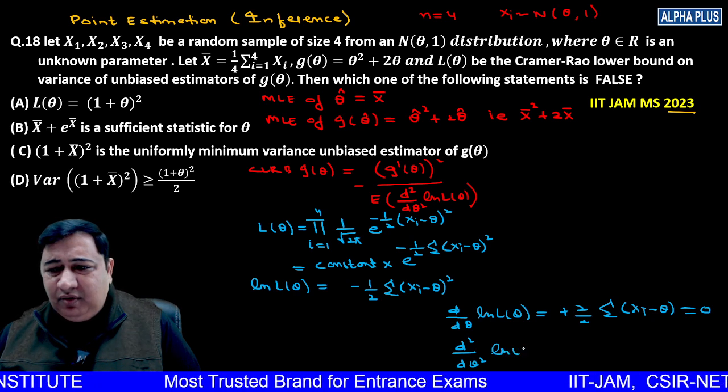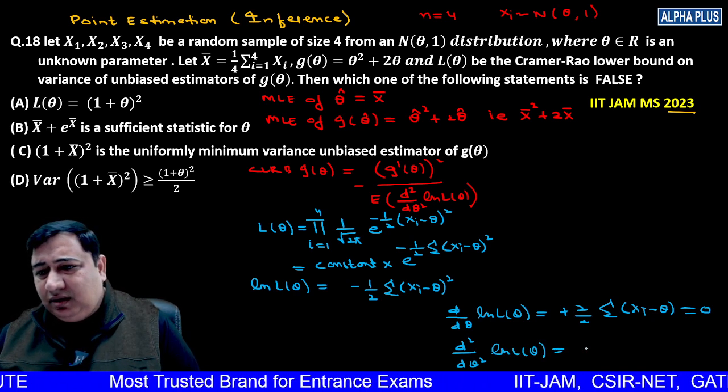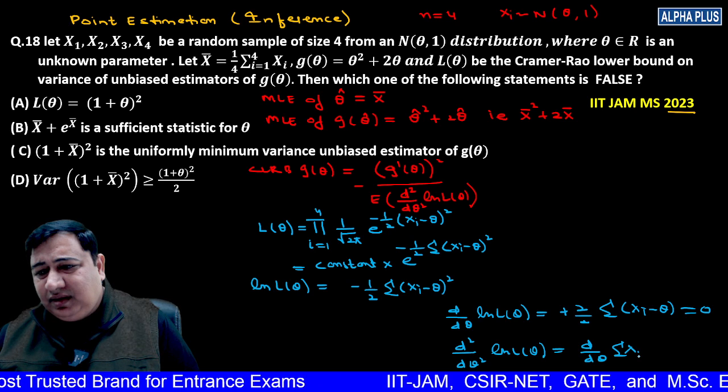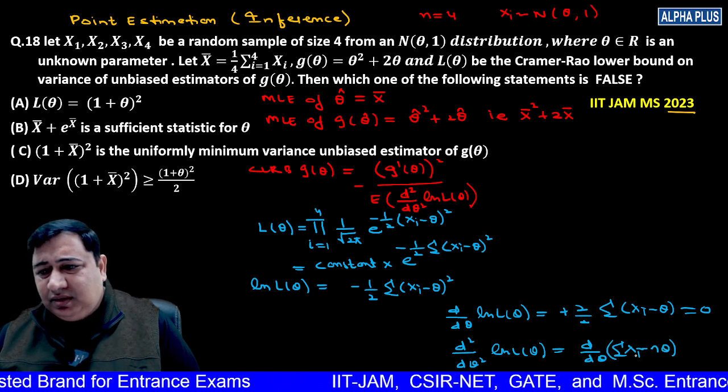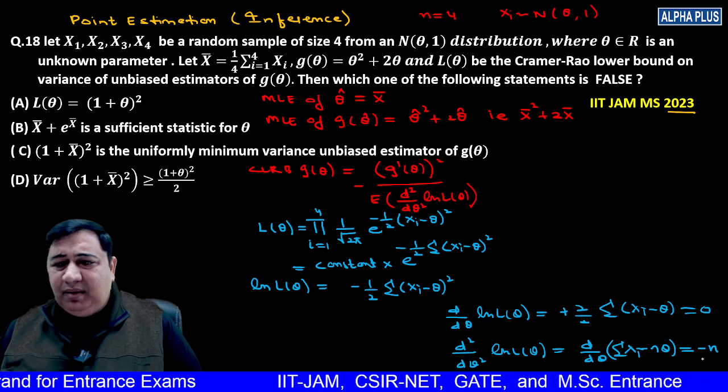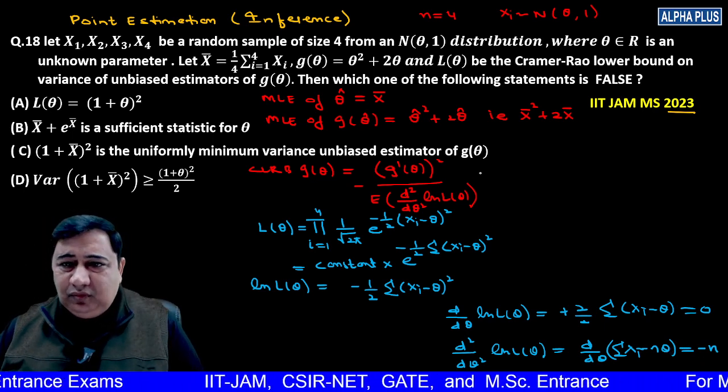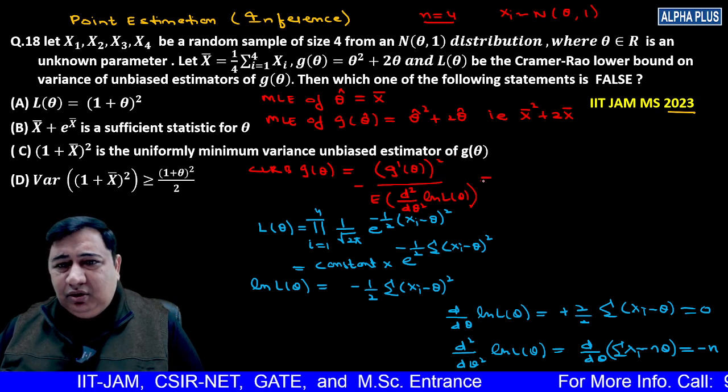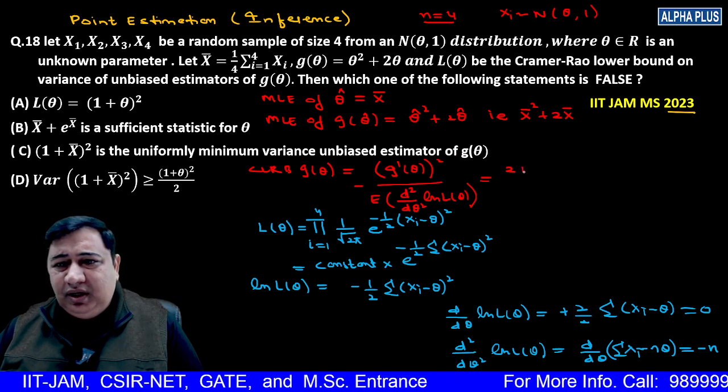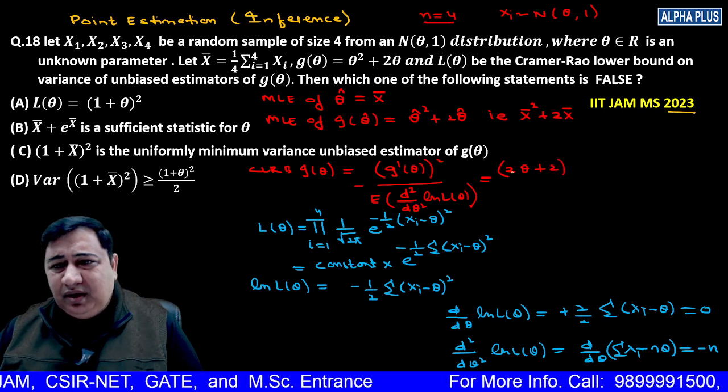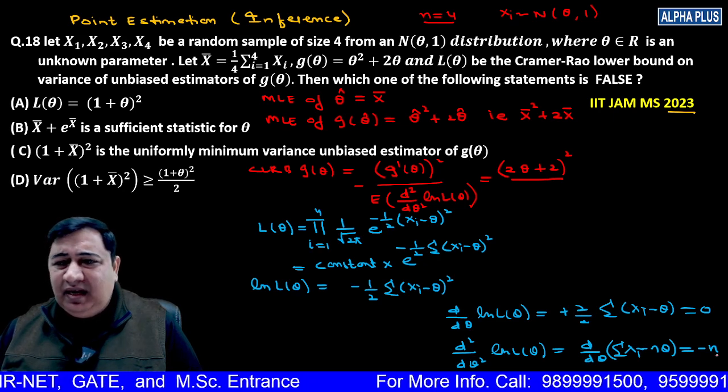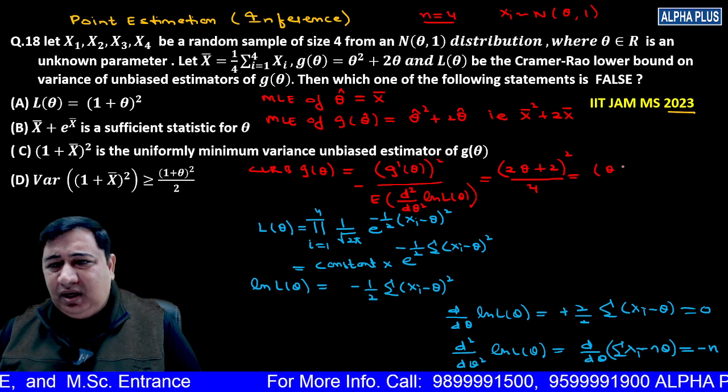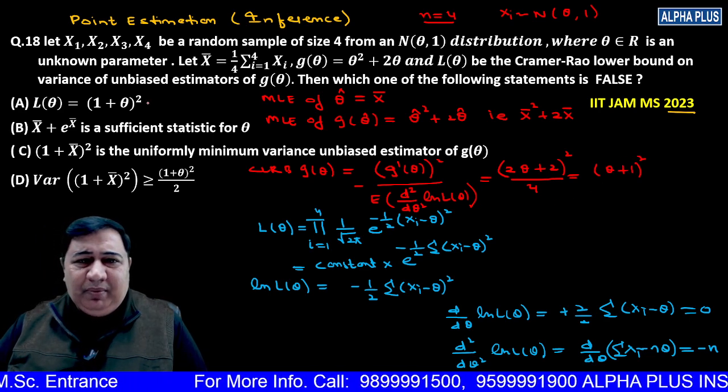Now the second derivative: d squared by d theta squared of log likelihood. d by d theta of summation Xi minus n theta, which is minus n. So minus n remains. Now applying the formula: n is 4 in the question, g'(theta) is 2 theta plus 2 squared, upon expectation of n which is n. Putting n=4, we get 2 squared over 4, which simplifies to (theta plus 1) squared. So this option is true.